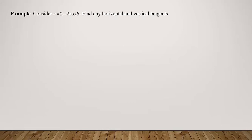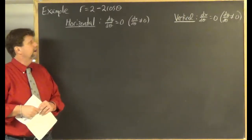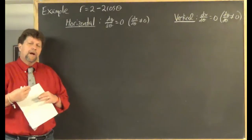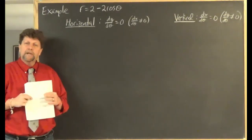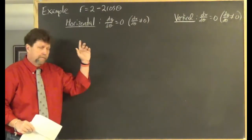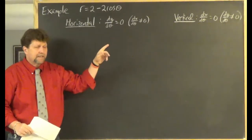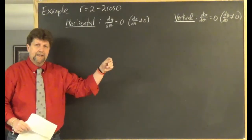Let's do a quick example. Consider the polar equation r = 2 − 2cosθ. Let's find any horizontal and vertical tangents. For a horizontal tangent, dy/dθ = 0 with dx/dθ ≠ 0. For a vertical tangent, dx/dθ = 0 with dy/dθ ≠ 0.